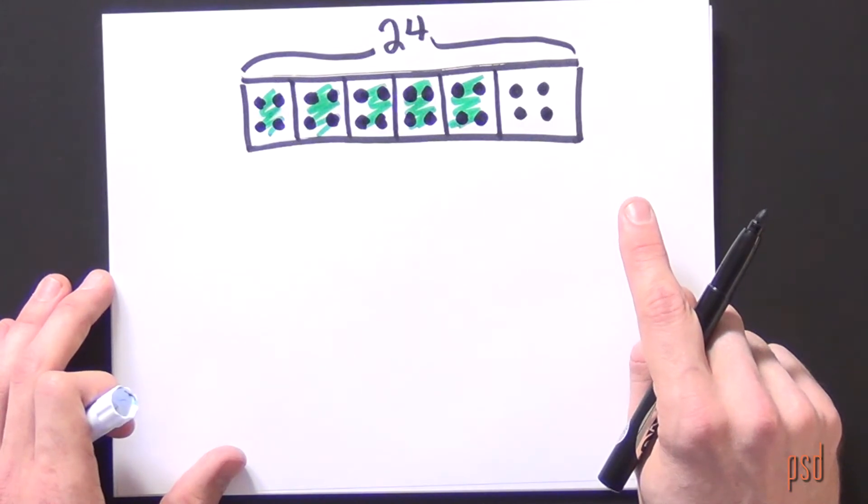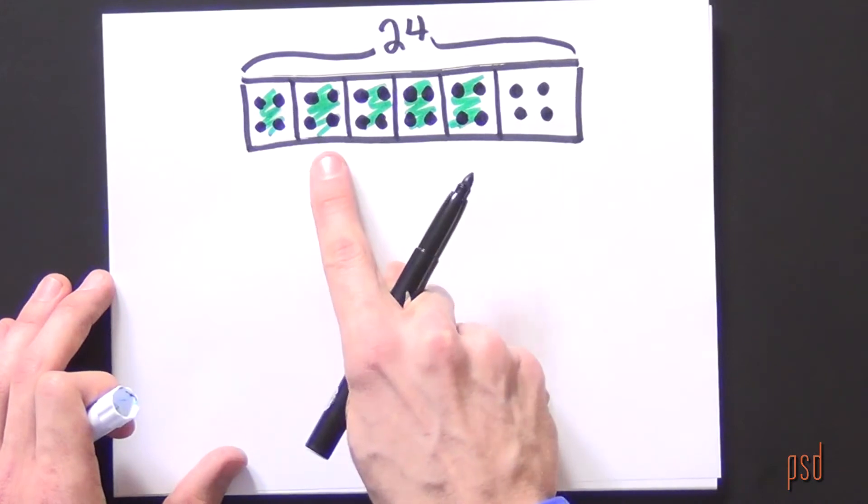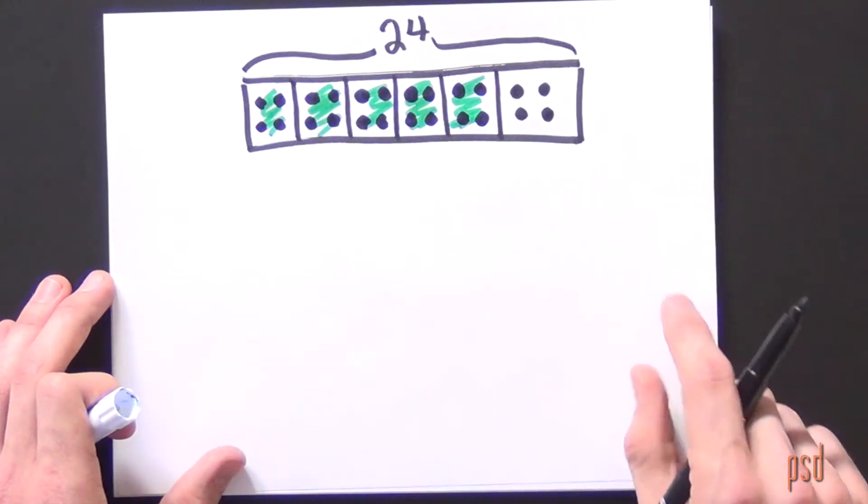Here you'll want to point out to the students that the five indicates how many times they count the four plants over and over. So they count five groups of four.